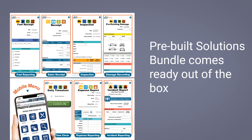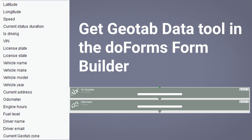Several of these mobile forms include getting real-time data from Geotab for documentation purposes, such as odometer readings and fuel readings. When building mobile forms, you can request data directly from Geotab in real-time. A good example would be asking for the odometer reading when a user goes on duty and off-duty, then you can calculate the miles traveled for expense account purposes.